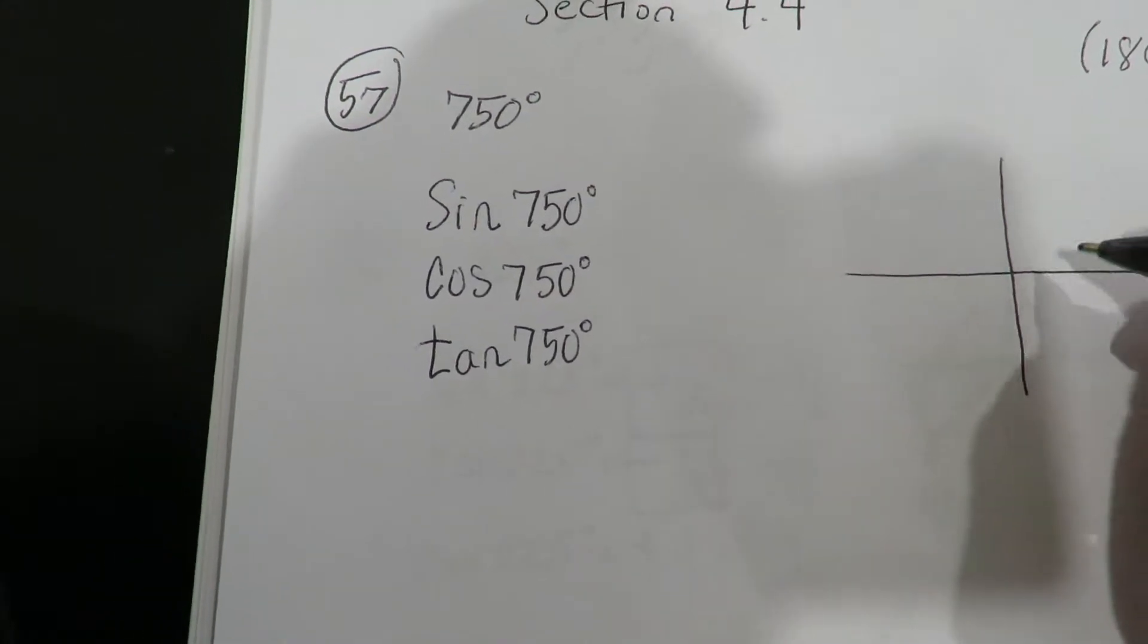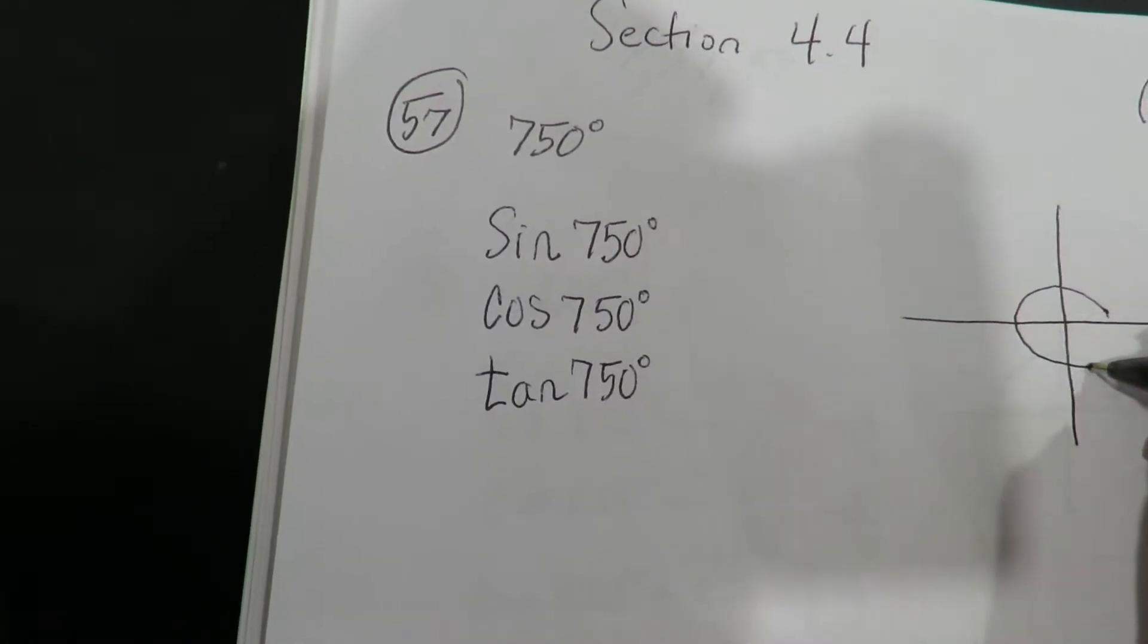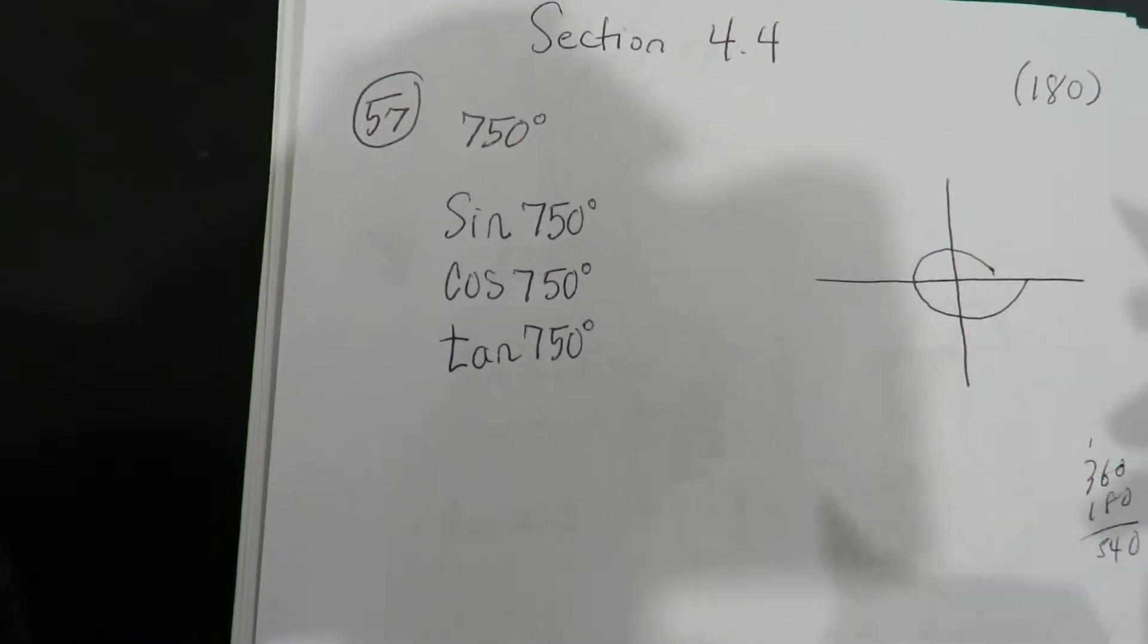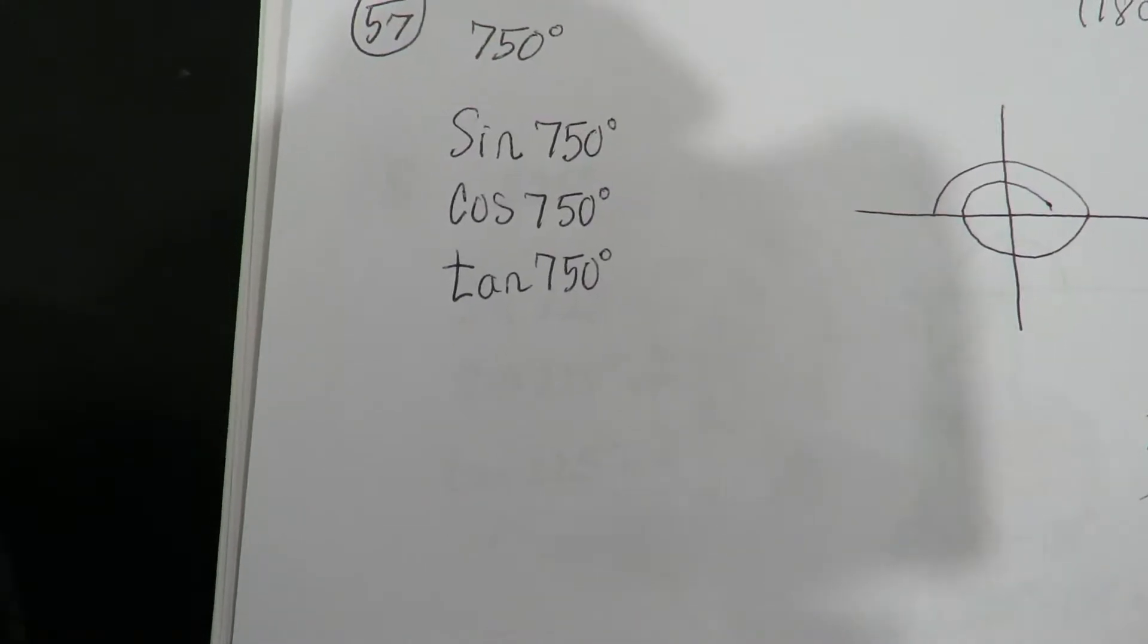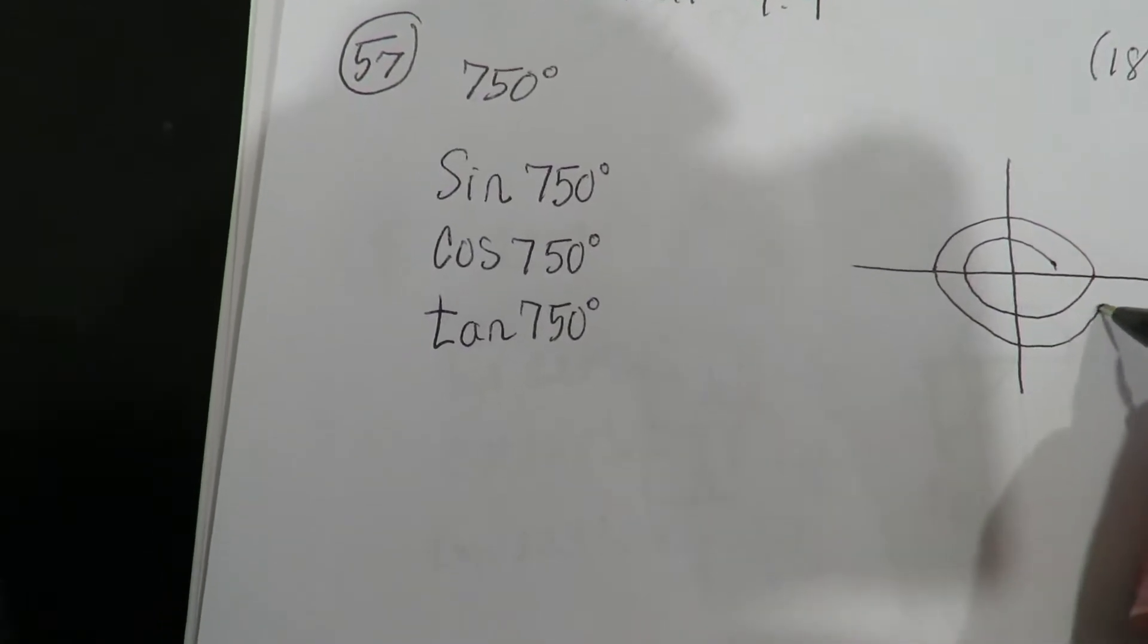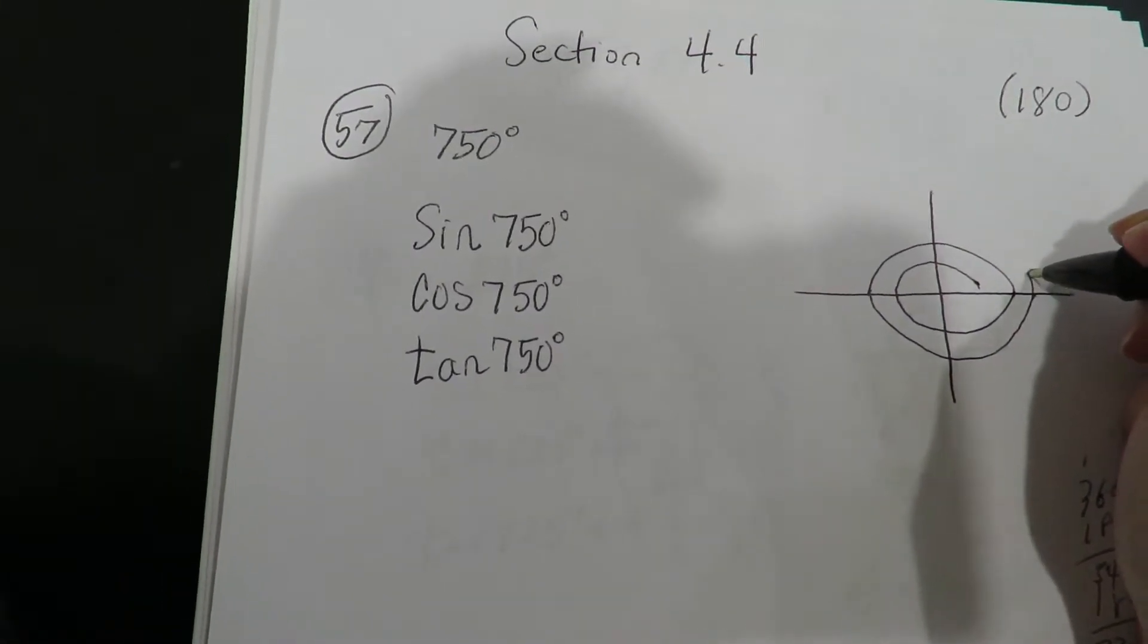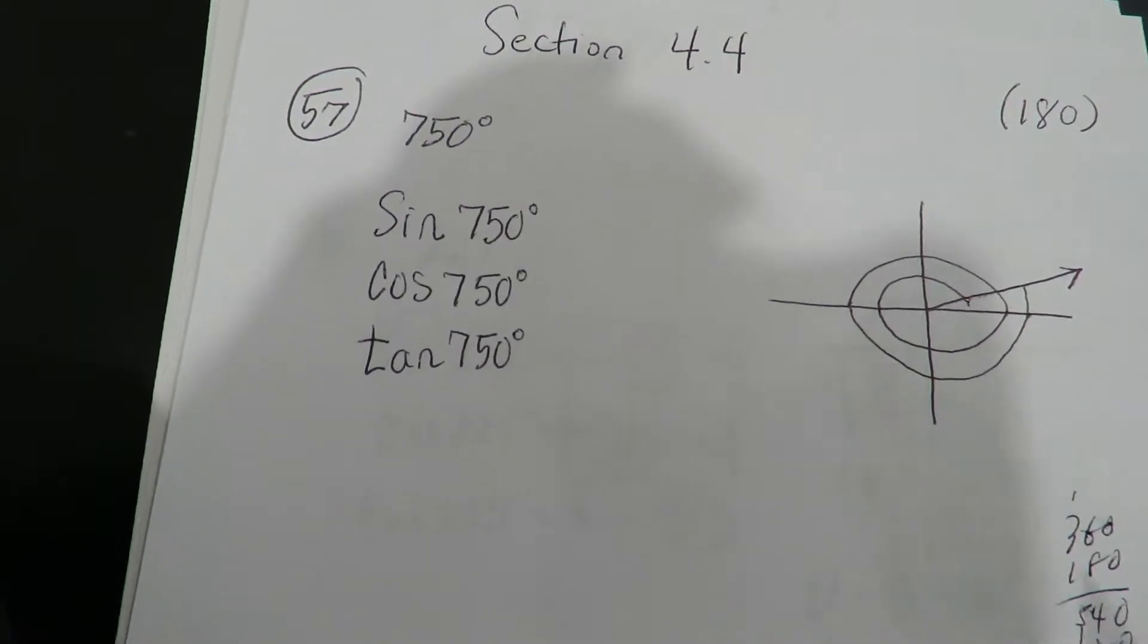So let's first draw 750. So here we go. This is going to be 180, 360, 360, and 180. So 540. We're not even close yet, right? We're going to add 180 again to this. 720 is here. And then this is going to be an additional 30. This is going to be an additional 30 on the 720. There we are. Okay, so that's 720.